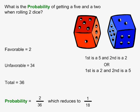There are 34 cases where we do not get a combination of a 5 and a 2. The total number of cases is 36. Probability is equal to favorable over total, so we have 2 over 36, which reduces to 1 over 18.